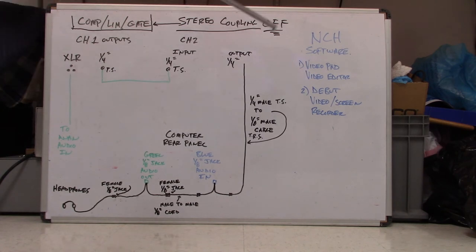I run NCH software. I have both the video pad video editor and the debut video slash screen recorder. While I'm recording the screen, I need to pipe audio back into that software. You have to hear my compressor limiter gate. The outputs. I didn't show all the outputs. I only show what I'm using on the outputs or inputs.